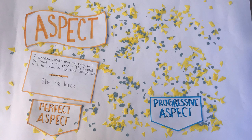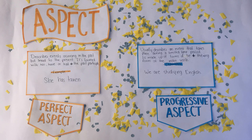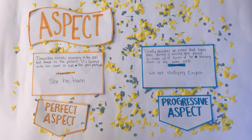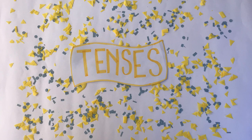The perfect aspect describes events occurring in the past but linked to a later time. It's formed with has, have, or had plus the past participle. The progressive aspect usually describes an event that takes place during a limited time period. It's made up of the forms of be plus the -ing form of the main verb.